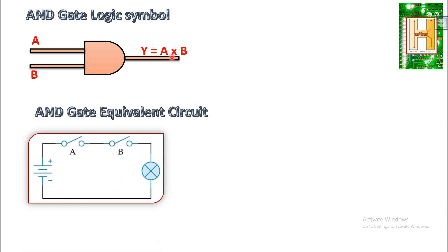Let us study about the equivalent circuit. In the equivalent circuit of the AND gate, you can observe that there are two switches A and B which are in series to each other. There is a battery, and the output can be seen in the bulb. The output lamp turns on only when both switches A and B are in the closed position.